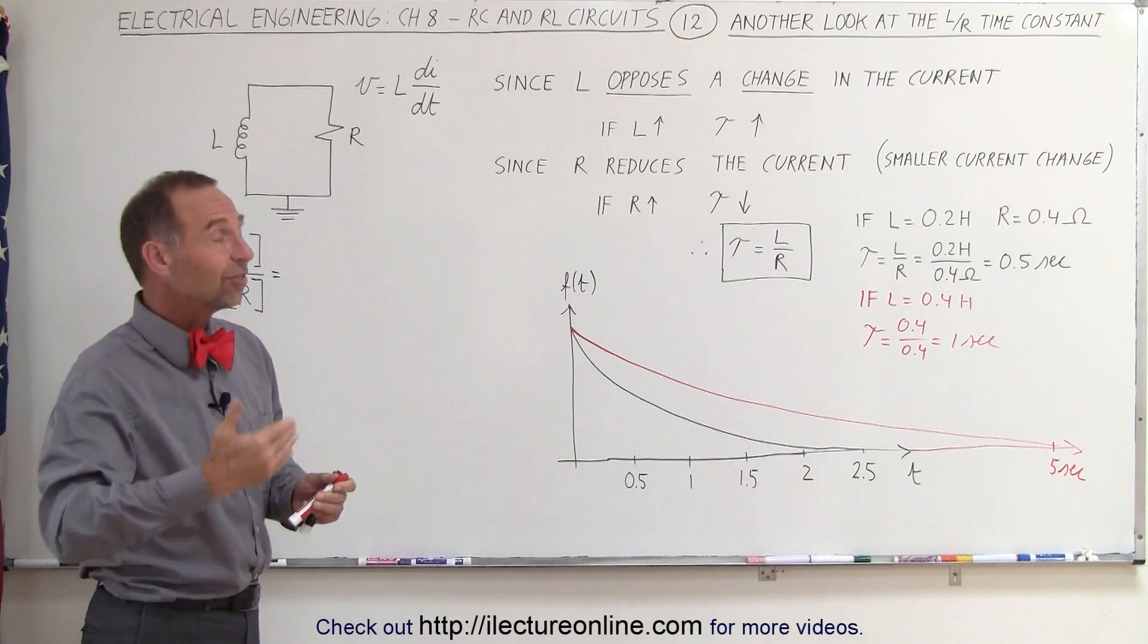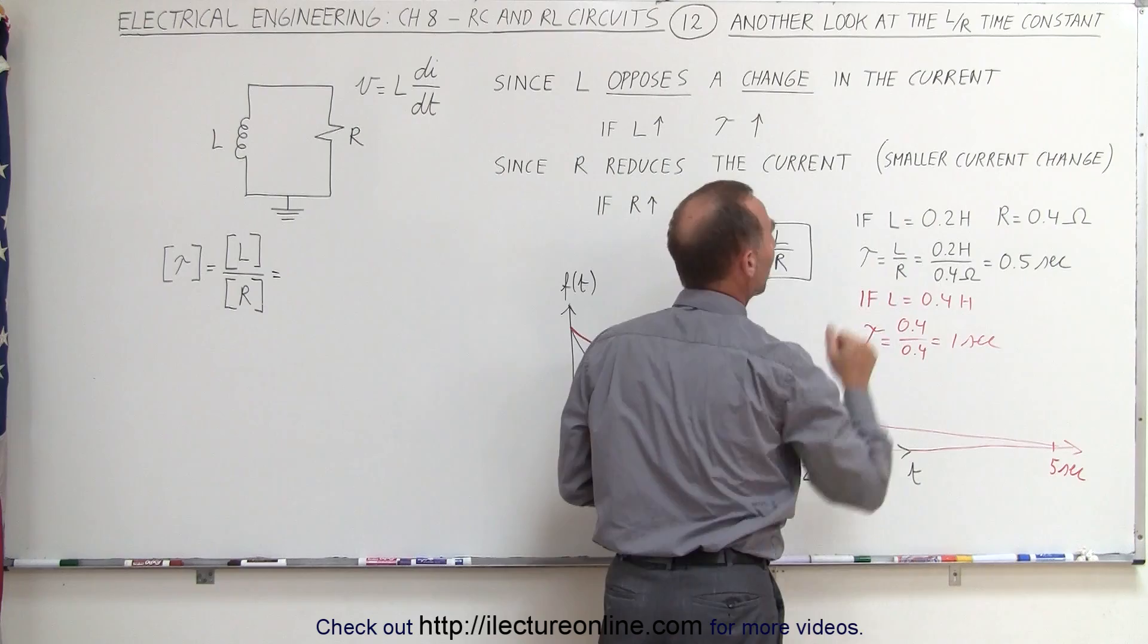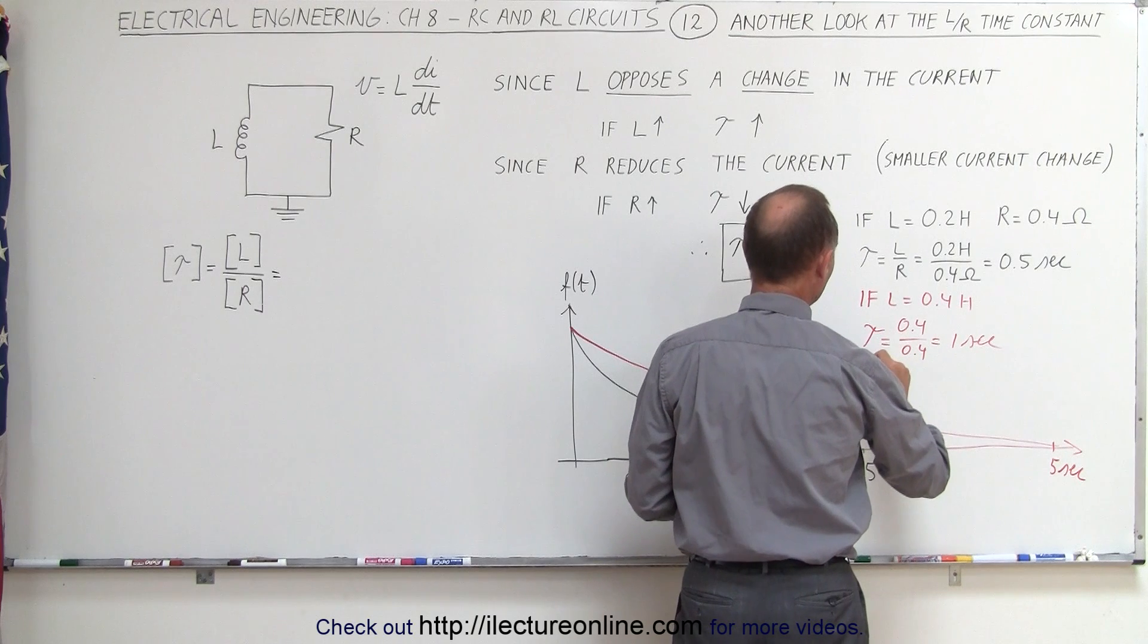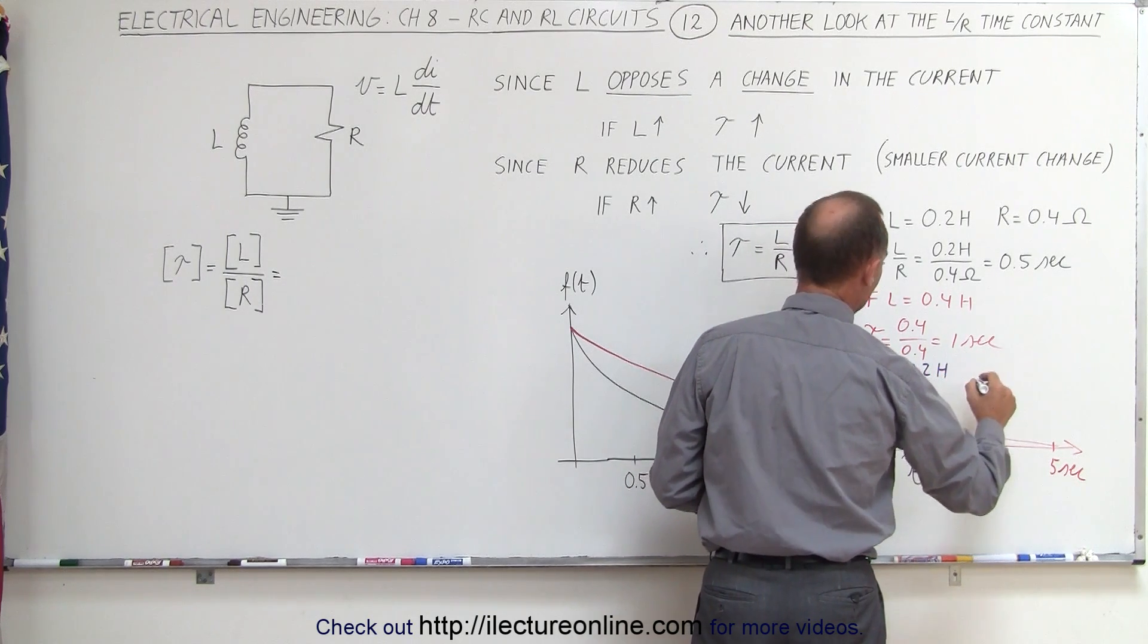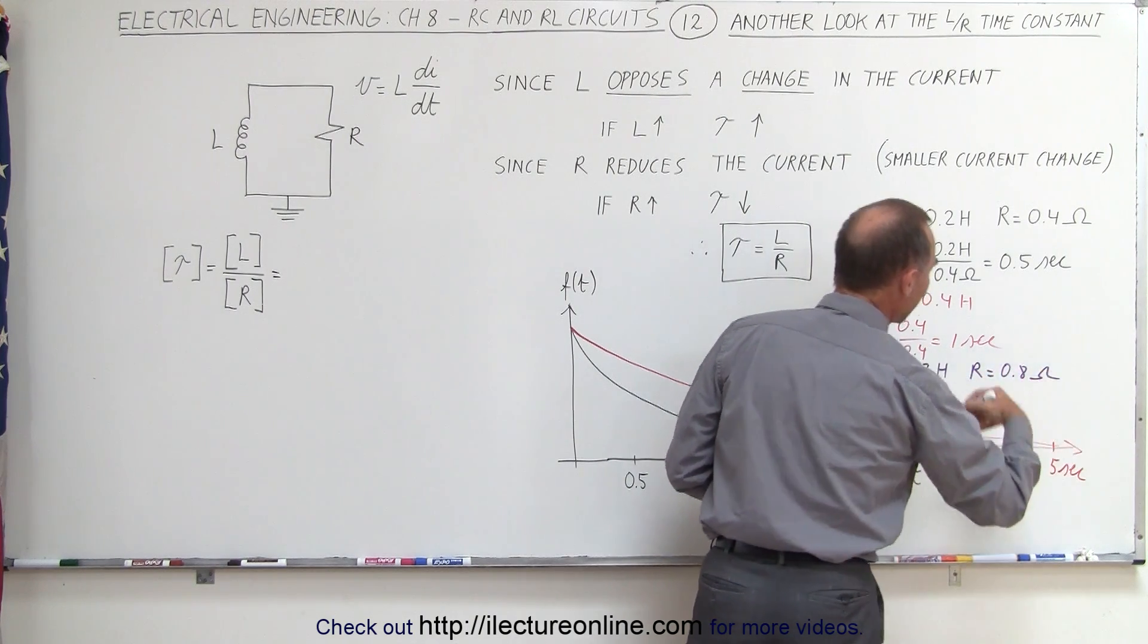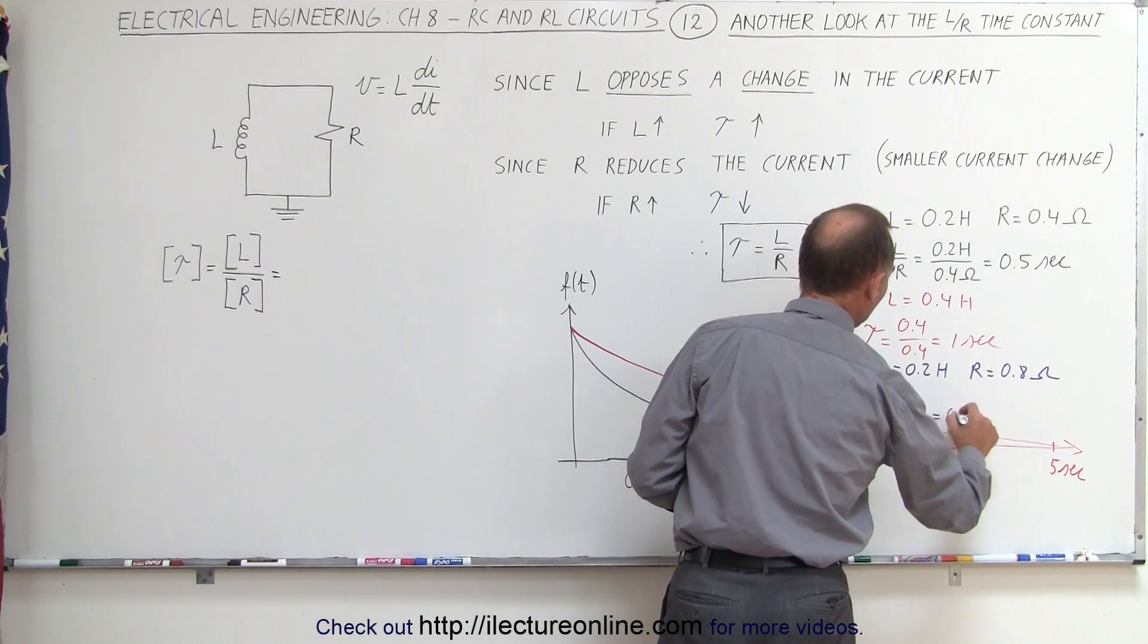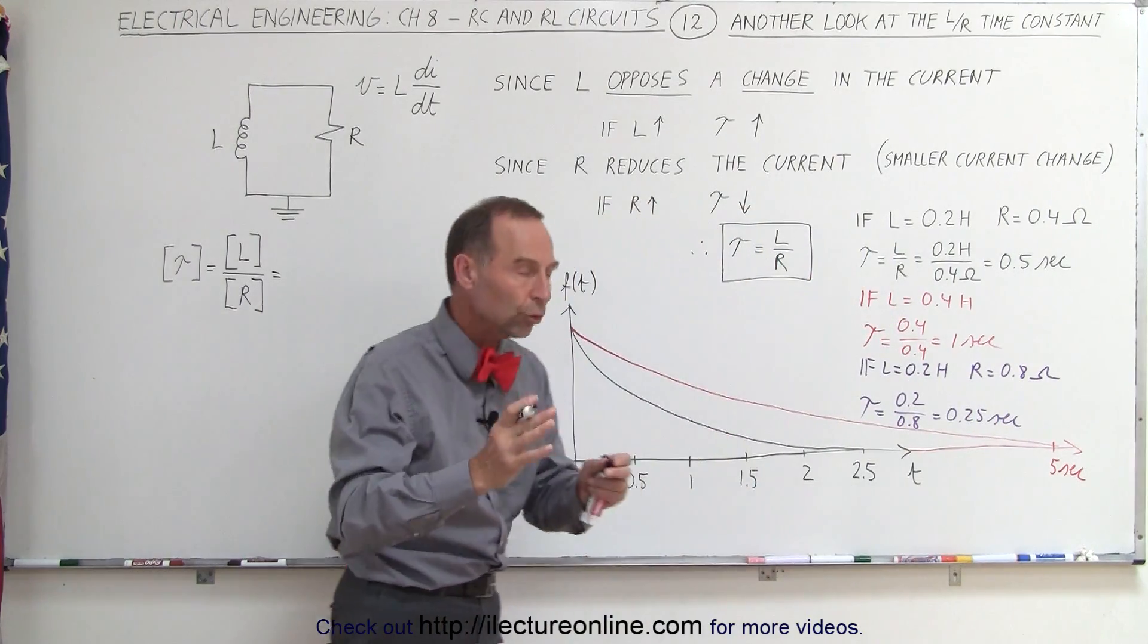What happens when the resistance is increased? So if we keep the initial inductance, but now we have a larger resistance, let me grab a different color right here. So now let's say if L equals 0.2 Henry's, and R now becomes 0.8 ohm, so we increase the resistance, then the time constant will be 0.2 divided by 0.8, which is 0.25.